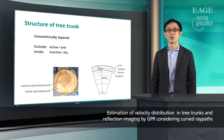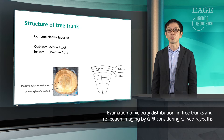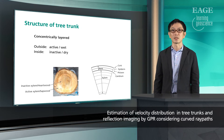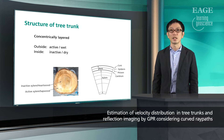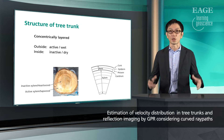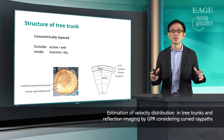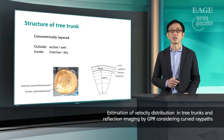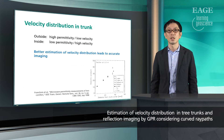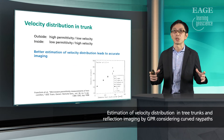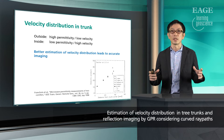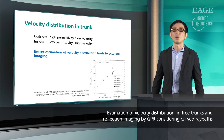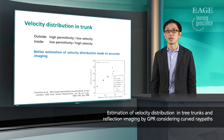However, when we think about real and live trees, a constant velocity is not the case. It is because the structure of tree trunk is concentrically layered, as we can see in the pictures. Usually, the outside part is active, so it is wetter, and the inside is inactive and drier. So the outside usually shows higher permittivity and lower velocity, and inside tends to be lower permittivity and higher velocity.